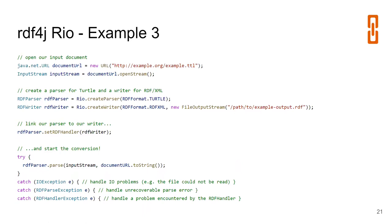We can combine parsing and writing to implement a simple transformer from one RDF serialization to another. We open an input stream from a Turtle document, create a Turtle parser and an RDF/XML writer pointing to an output file, then link them together — the handler of the RDF parser is the RDF writer, which accepts statements coming from the parser and writes them out in the selected serialization. When parsing starts, the result is a transformation of the Turtle file into an RDF/XML file.